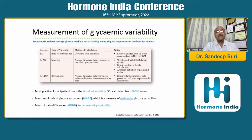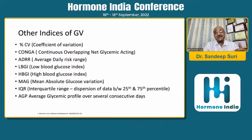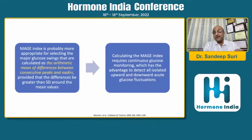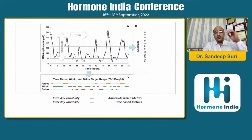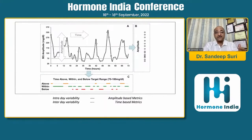How can we measure glycemic variability? There are various parameters and indices. Standard deviation, mean amplitude of glycemic excursion (MAGE), mean of daily differences (MODD) for day-to-day variability, coefficient of variation (CV), CONGA, ADRR, LBGI, HBGI, MAG, interquartile range, and AGP - average glycemic profile. These are amplitude-based matrices or time-based matrices; they can measure intraday or interday variability.